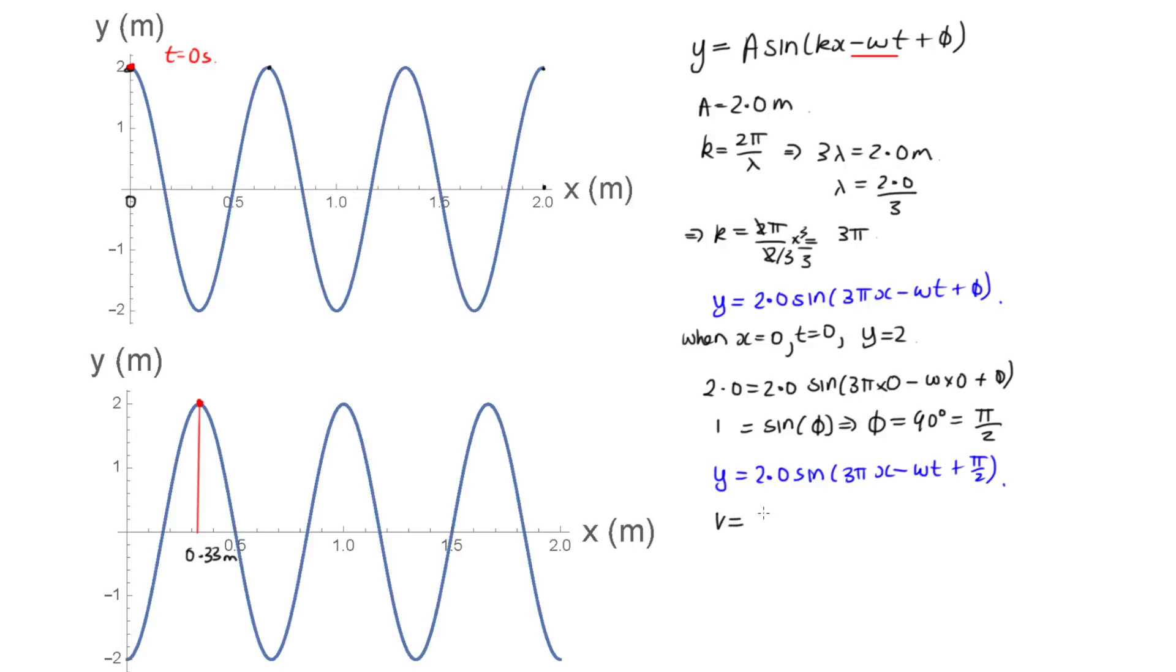So V is equal to the displacement, which is 0.33, divided by the time, which was one second, so that is equal to 0.33 meters per second. And we also know that V is equal to omega over k. So omega is equal to k times 0.33, so this is equal to 3 pi times 0.33, so this is equal to 1 pi. So that's one option to get the final answer, which is y is equal to 2.0 sin 3 pi x minus 1.0 pi t plus pi on 2.